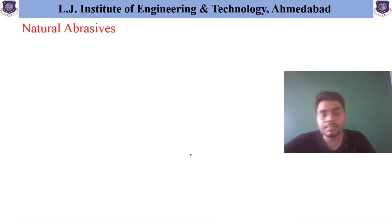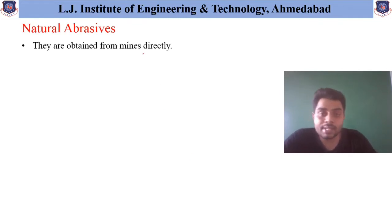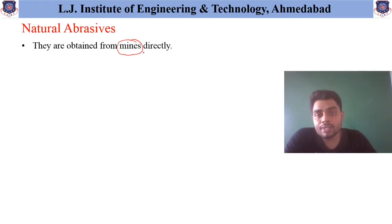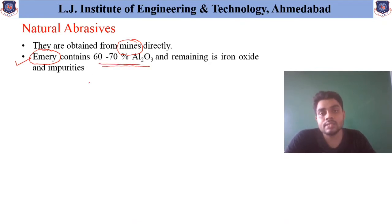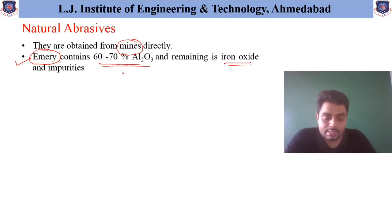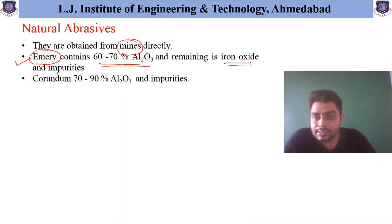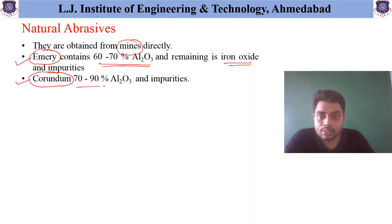Natural abrasives are directly available from the mines, and there is variation in the abrasives obtained from the mines. The emery material contains 60 to 70 percent of aluminum oxide (Al2O3) and the remaining is iron oxide and impurities. Corundum has 70 to 90 percent of aluminum oxide and the rest are impurities.